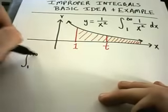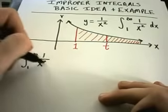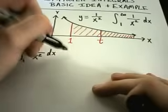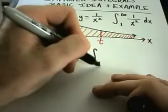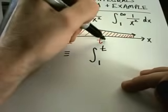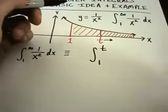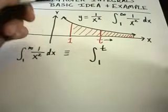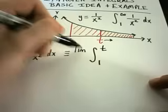Okay, so instead of integrating from one to infinity of 1 over x² dx, I'm going to turn this problem into an equivalent problem and what I'm going to do is I'm going to integrate from one to t, but now I want t to just go keep going further and further to the right.